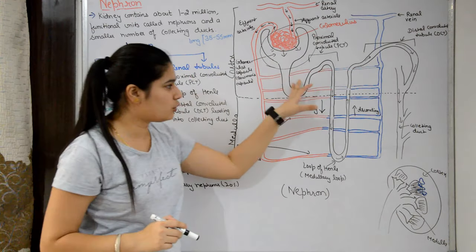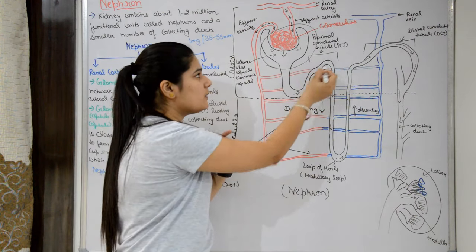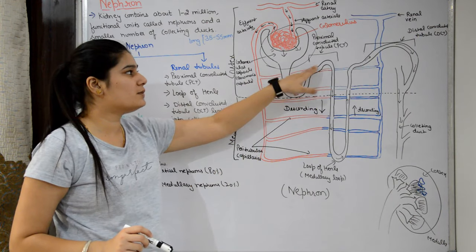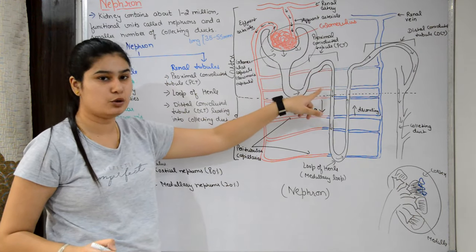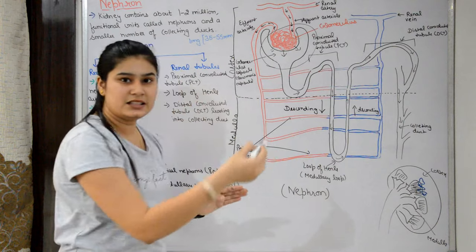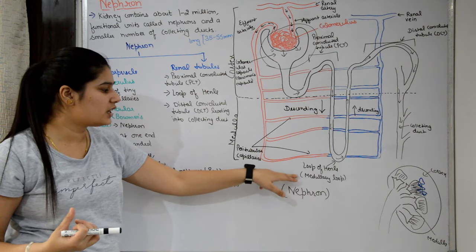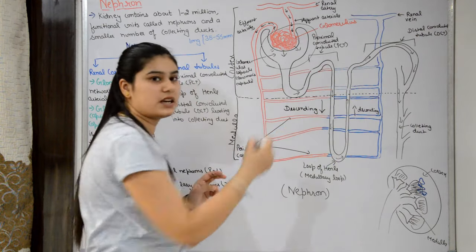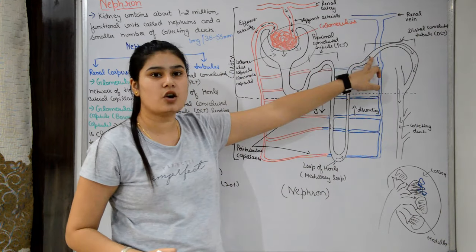Now let's discuss renal tubules. The tubular part of the nephron includes tube-like structures. The first part after the glomerular capsule is the proximal convoluted tubule (PCT) — proximal means nearest, and convoluted means folded. The PCT then descends into a loop called the loop of Henle, also known as the medullary loop because it is located in the medulla. It has a descending limb and an ascending limb.